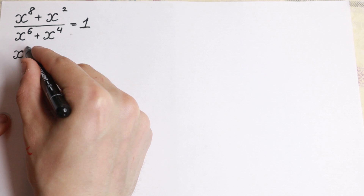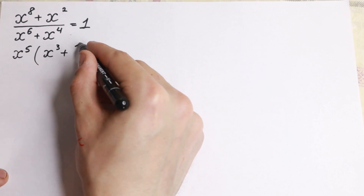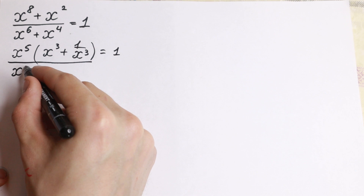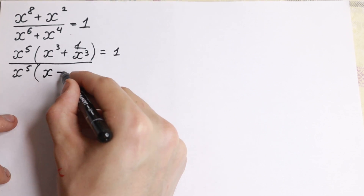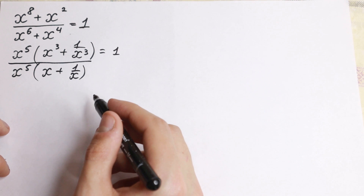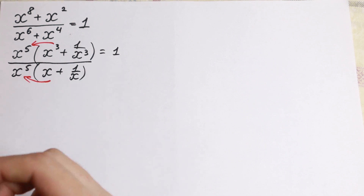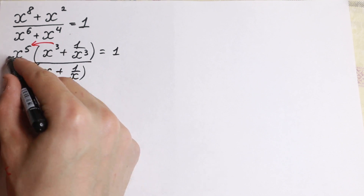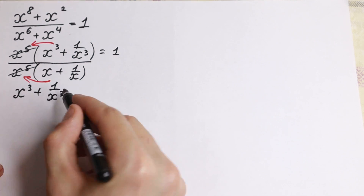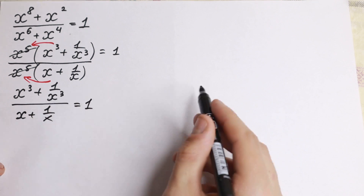If we factor out x to the fifth power, we will have x to the fifth, and in parentheses we'll have x cubed plus 1 over x cubed equal to 1, and in our denominator the same — x to the fifth power times the quantity x plus 1 over x. We just factor out x to the fifth power from both terms, so we can cancel x to the fifth power, leaving x cubed plus 1 over x cubed over x plus 1 over x, equal to 1.